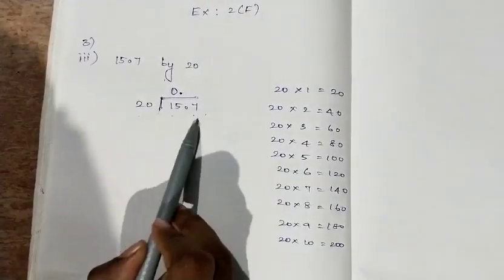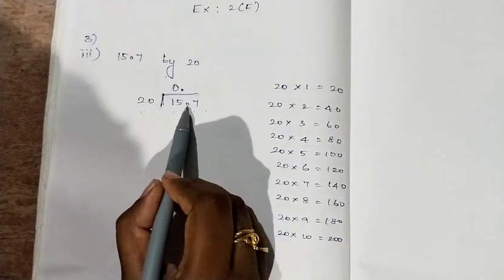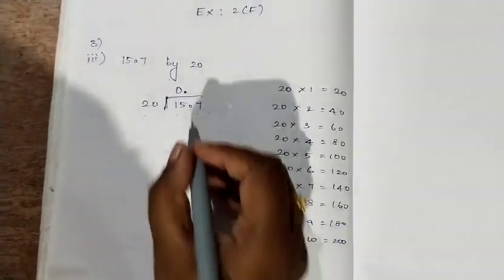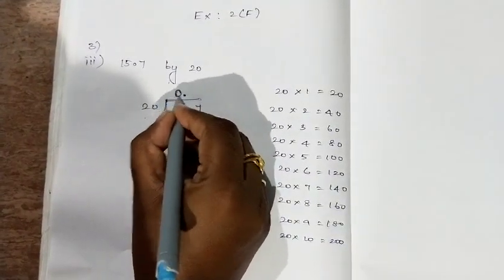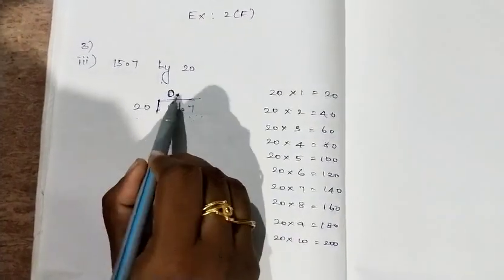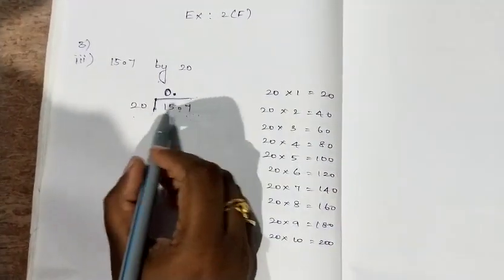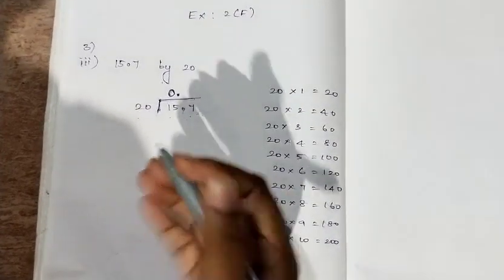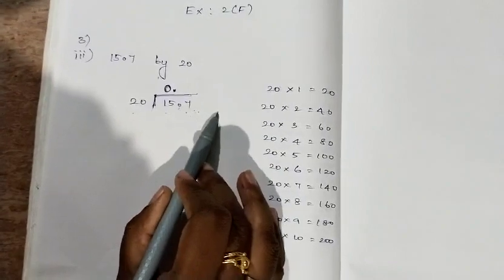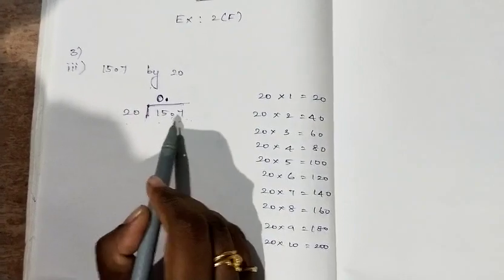We can't get 15.7 in the 20 times table, so the point is we should remove this point from 15.7. What I am going to do is keep a point in the quotient, so that I can easily remove this point from 15.7. From this step I am going to consider this as 157, because I have kept a point in the quotient.